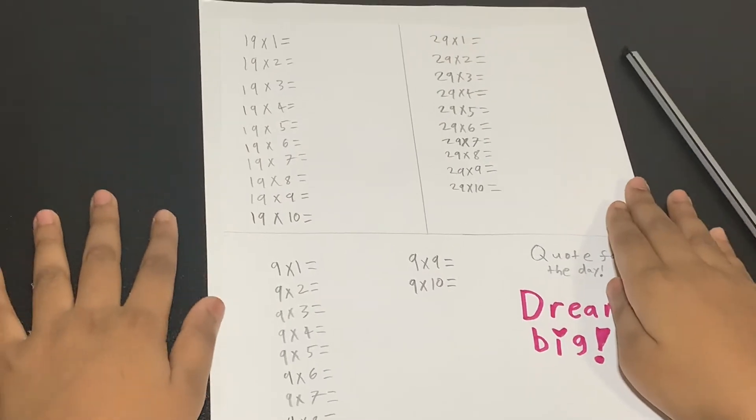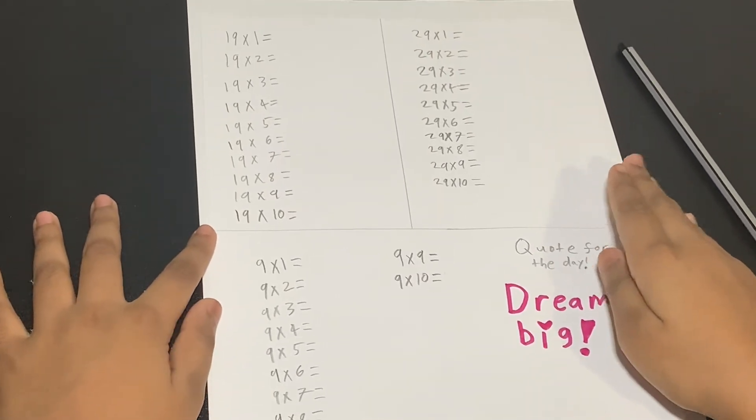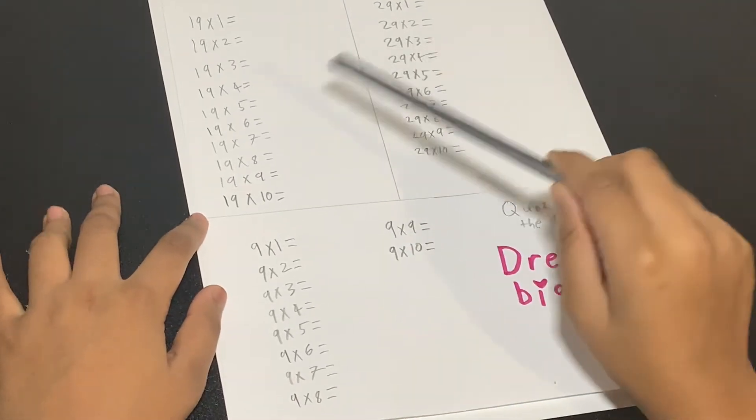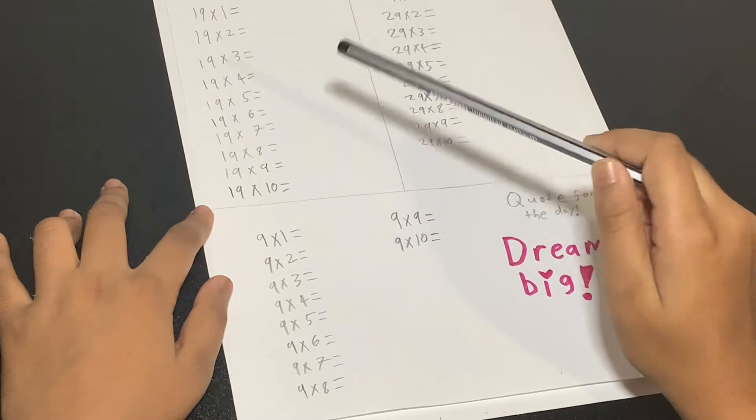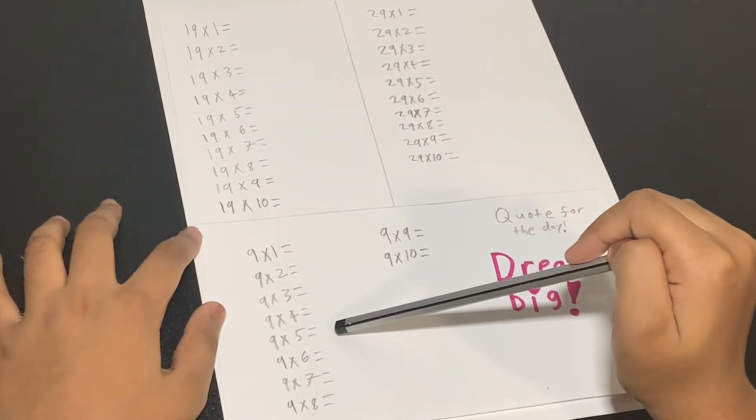Hey guys, welcome back to my channel Blogtopia. Today I'm going to be showing you multiplication math shortcuts. So let's start. For these numbers 19, 29, and 9, there are simple shortcuts and 9 is the most popular one.